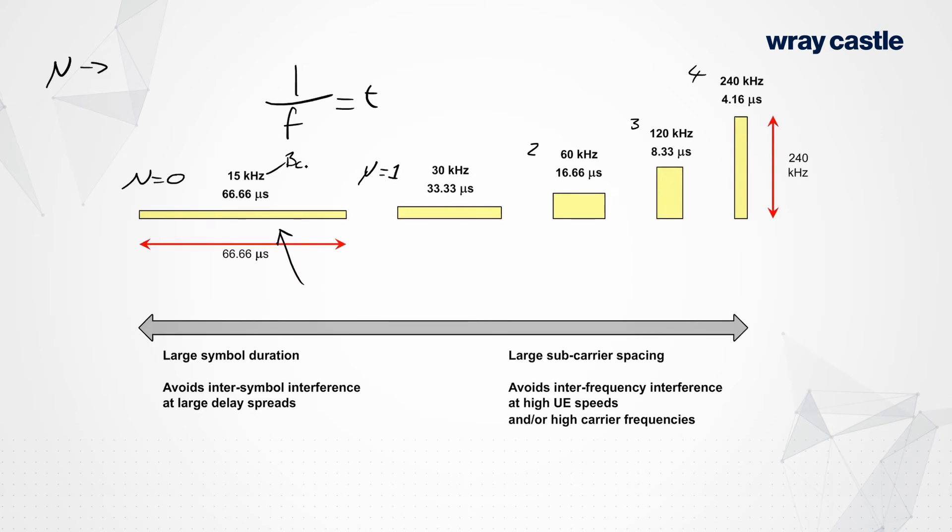If we're prepared to make a compromise, what we can do is we can increase the subcarrier spacing, which now means that the minimum coherence bandwidth that we can now accommodate is around 30kHz. So that means that a 30kHz numerology will not perform as well as a 15kHz numerology in a wide open area. Fading will start to cause problems with the radio interface.